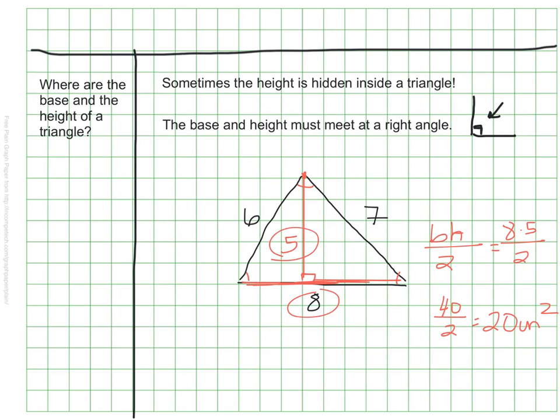These extra numbers here, while they would be useful if I was finding perimeter, actually have nothing to do with finding the area, because they are neither the base nor the height.